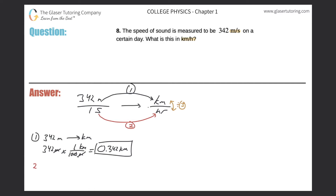Step two: take one second and convert that into hours. We write down one second with seconds on the bottom. If you know how many seconds are in an hour you can do this in one step, but I'll assume we don't. So I need another unit on top — I'll put minutes. The relationship between seconds and minutes is that in one minute there are 60 seconds.